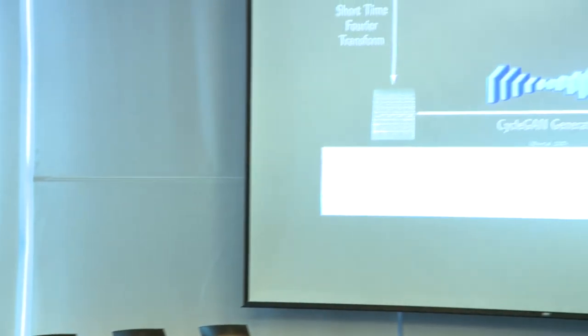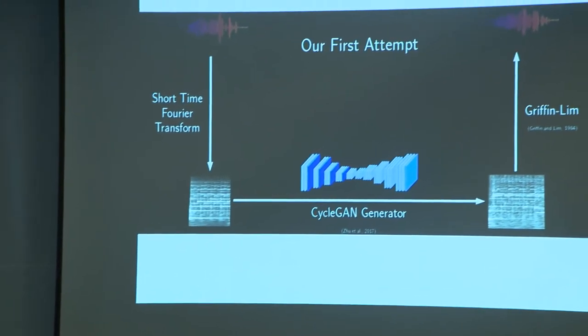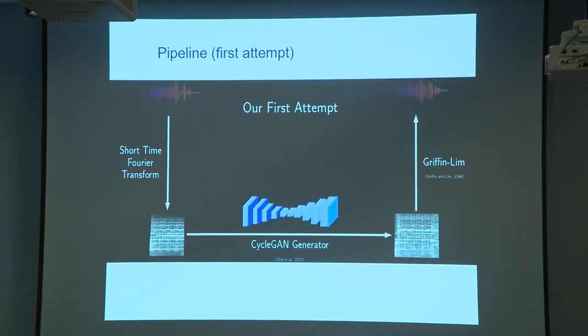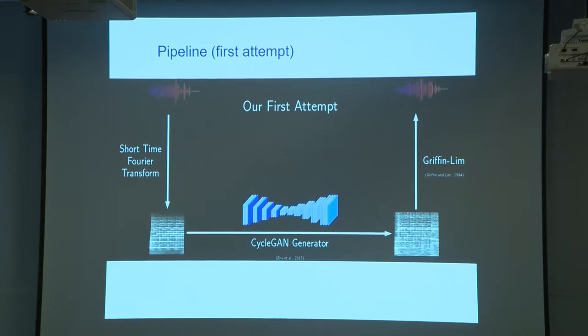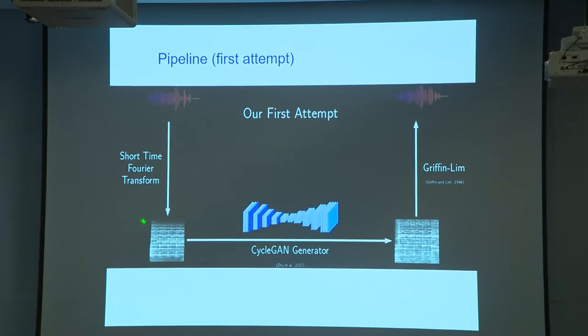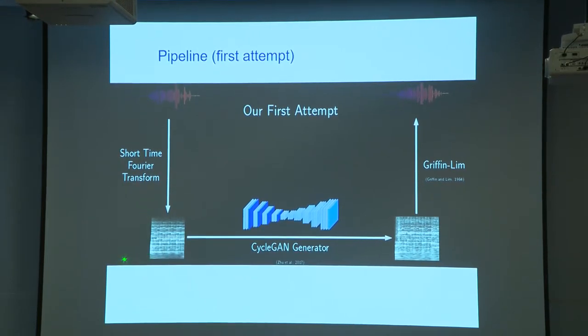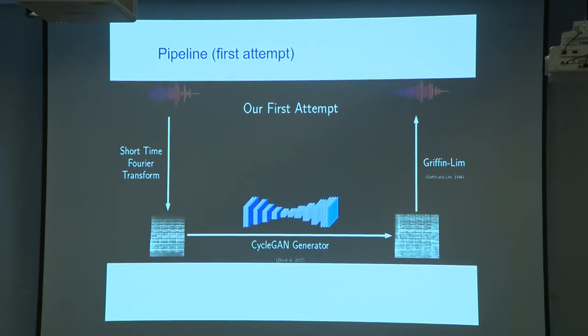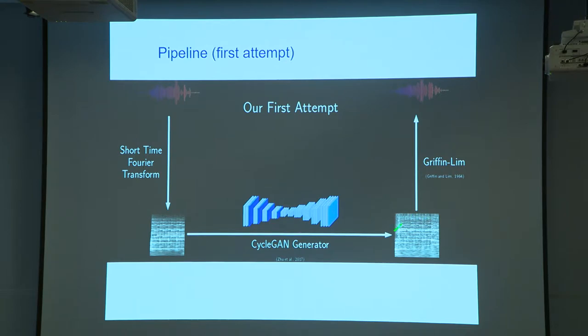The goal is to change the timbre of the music while keeping everything else the same. Our first attempt was to take the waveform directly. The training data would be unrelated banks of piano, harpsichord, flute, or violin music — unsupervised learning. We convert the waveform to a spectrogram via short-time Fourier transform, representing frequency on the y-axis and time on the x-axis, and then apply CycleGAN to convert it to the target instrument.